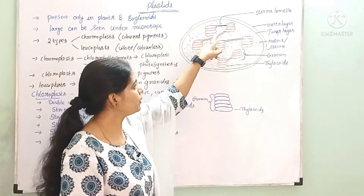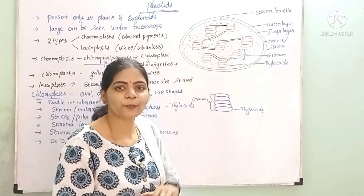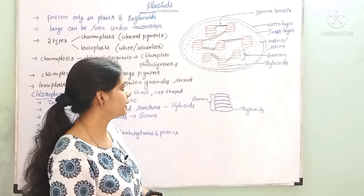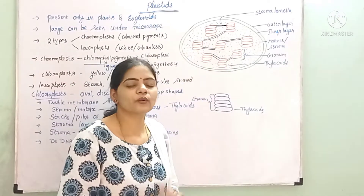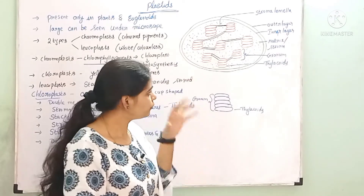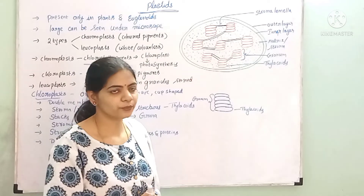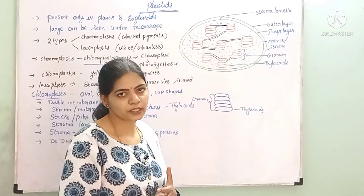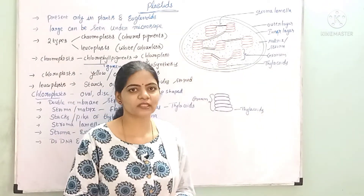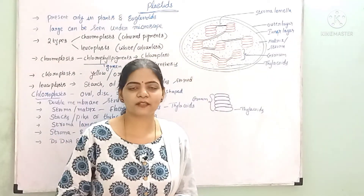This granum is connected to a tubular structure called stroma lamellae. These stroma lamellae connect the grana to one another. The thylakoids carry out photosynthesis. This completes the structure of chloroplasts and plastics.